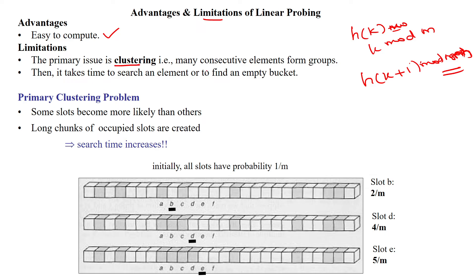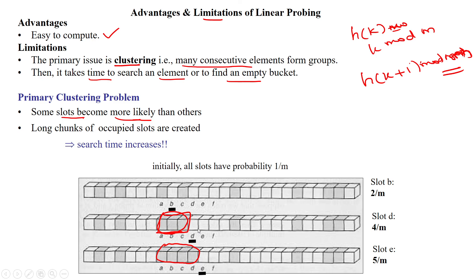The primary limitation is clustering. When many consecutive elements are present, they form a cluster. Here, three consecutive locations are forming a cluster. This causes more time to search an element or to find an empty bucket. If a cluster is formed, it will consume more time for searching the key or empty space. These slots become more likely to be probed than others, making clustering one of the primary limitations of the linear probing open addressing technique.